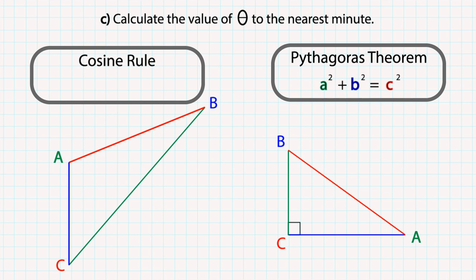Pythagoras theorem states that the square of the hypotenuse of a right-angled triangle is equal to the sum of the square of the other two sides. Cosine rule states that the square of the length of any side of a triangle equals the sum of the square of the other two sides minus twice of their product multiplied by the cosine of their included angle.